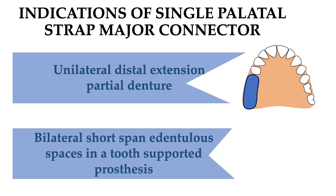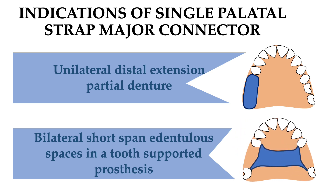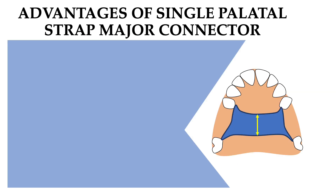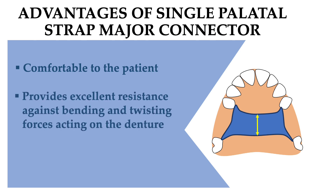It is also indicated for bilateral short-span edentulous spaces in tooth-supported prostheses; if used bilaterally, it must be tooth-supported (Kennedy's Class III). The advantages of the single palatal strap major connector: it is comfortable to the patient because the metal is very thin. It also provides excellent resistance against bending and twisting forces acting on the denture.